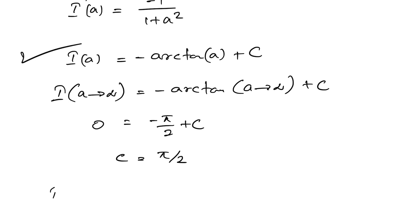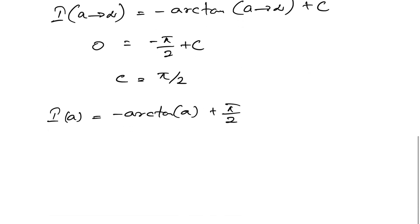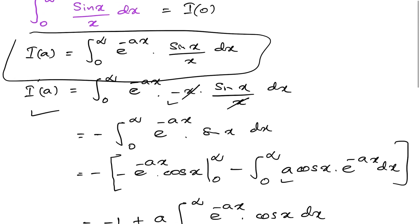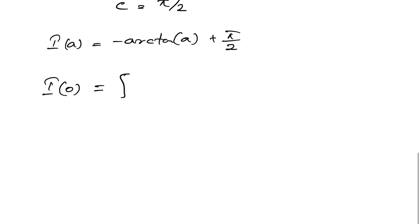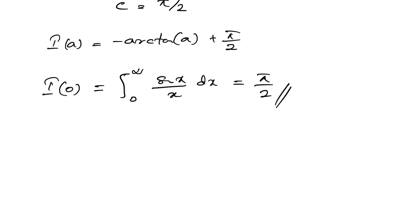Therefore I(a) = −arctan(a) + π/2. Taking I(0): I(0) = −arctan(0) + π/2 = 0 + π/2 = π/2. Since I(0) equals our original integral, the integral from 0 to infinity of sin(x) over x dx equals π/2. If you like this type of video, please subscribe to the channel. Thank you for watching.